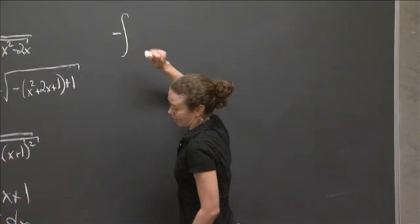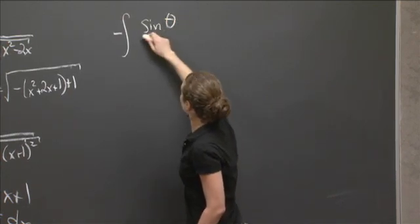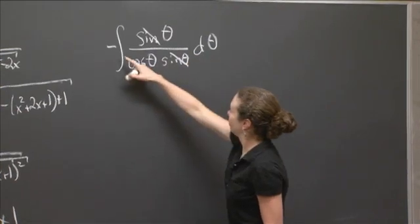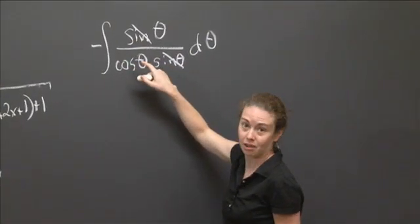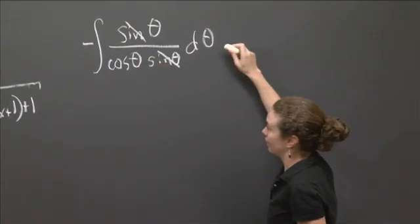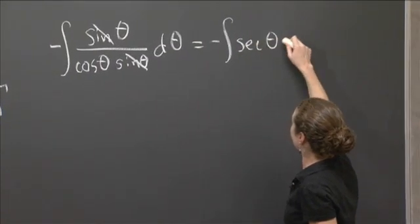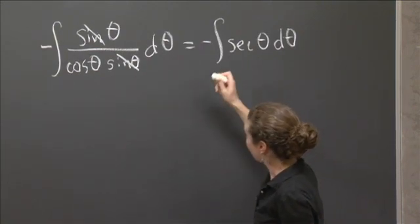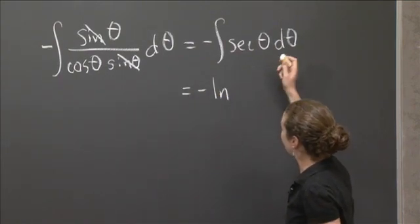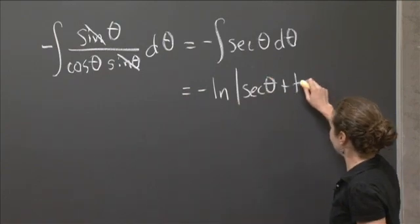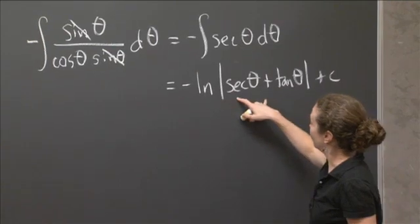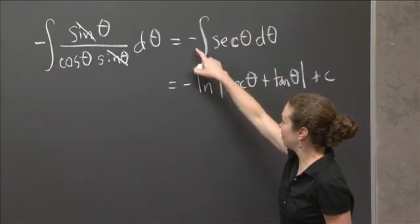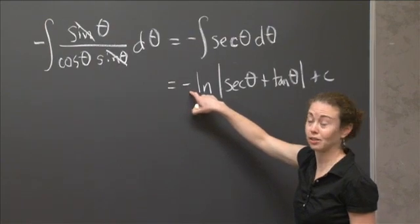Rewriting the integral: putting the negative in front, we get negative sine theta over cosine theta sine theta d theta. The sine thetas divide out, giving negative 1 over cosine theta, which is negative secant theta. So we have the negative integral of secant theta d theta. The antiderivative of secant is negative natural log absolute value of secant theta plus tangent theta, plus C. The negative was already there from the substitution — I didn't add it when taking the antiderivative.